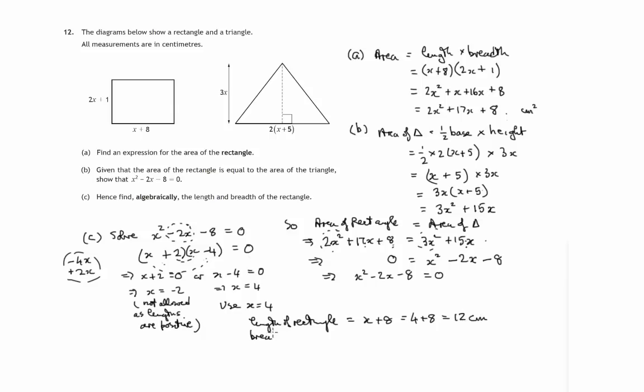And the breadth of the rectangle is 2x plus 1 which is 2 times 4 plus 1. 2 times 4 is 8 plus 1 is 9. So it's 9 centimeters. So we've got a 9 by 12 rectangle.